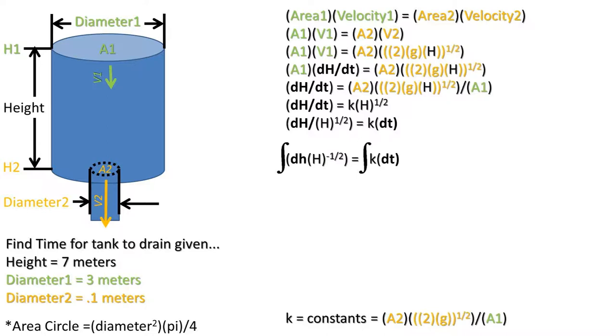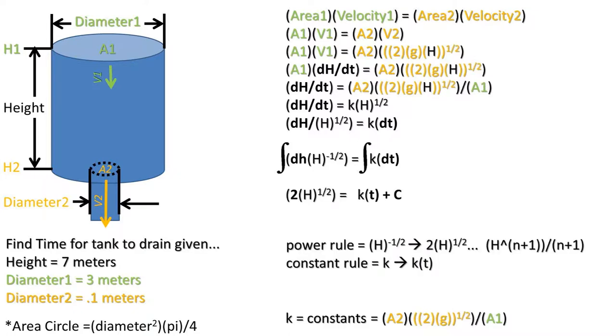Now we can integrate both sides of the equation with respect to the variable that is changing on either side. Recall that raising something to the negative power is the same as dividing by that value to that power. I did this to height. We use a combination of the power rule and the constant rule, which for your reference are listed on this slide.